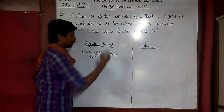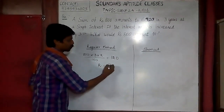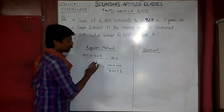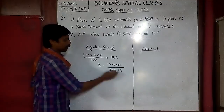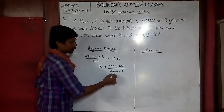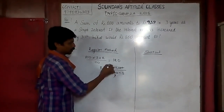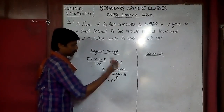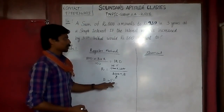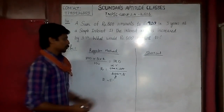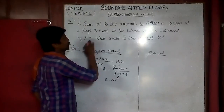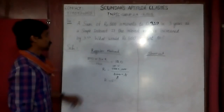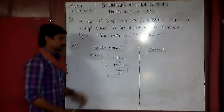So 120 = (800 × 3 × R) / 100. Solving: R = 120 × 100 / (800 × 3). Cancelling, the interest rate R = 5%. So R is equal to 5%.